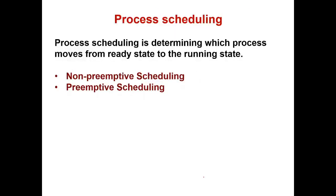Now we will see process scheduling. Process scheduling has two types: non-preemptive scheduling and preemptive scheduling. Process scheduling is the act of determining which process moves from the ready state to the running state. It is very important to select the processes from the ready state, as processes arrive from the new state and wait in the ready state.